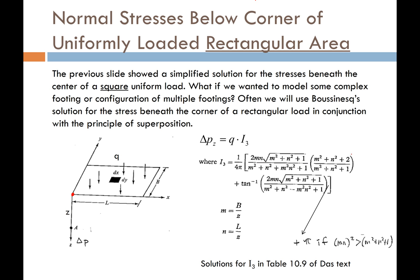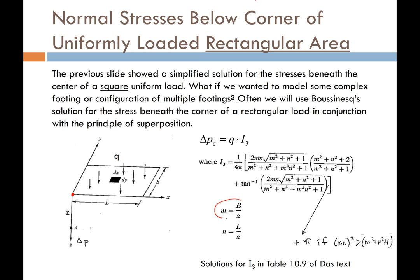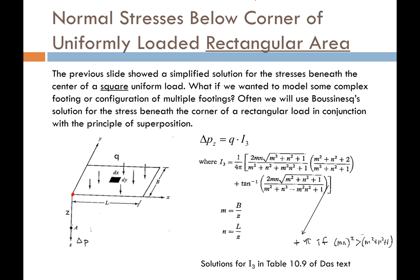Remember, L is always the long side of the rectangle and B is always the short dimension. All we're going to do is take Q, the uniform load of the rectangle, and multiply it by the influence factor I-sub-3. That tells us the increase in stress at any point below the corner of our rectangle at some specified depth Z.